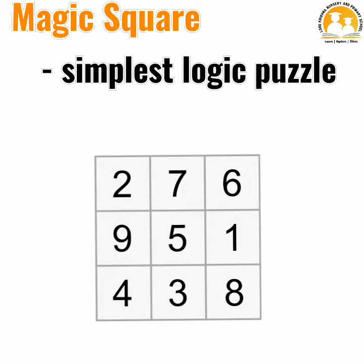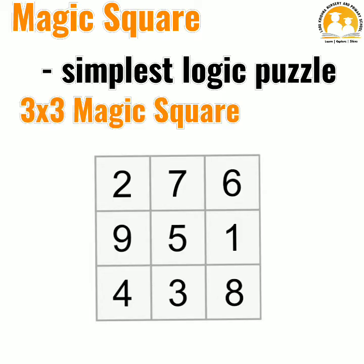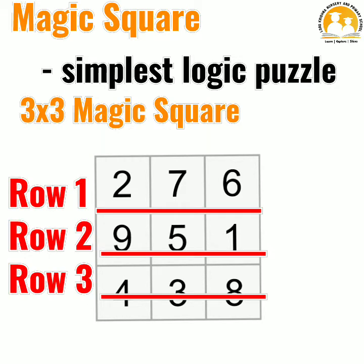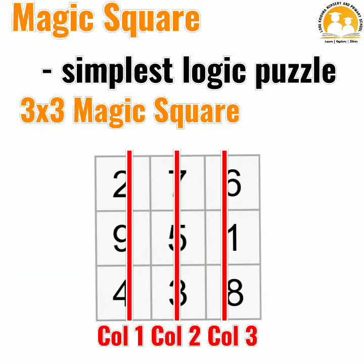For example, this is a 3x3 magic square. It is 3 rows and 3 columns. This is row 1, this is row 2 and this is row 3. That is 3 columns. This is column 1, this is column 2 and this is column 3.